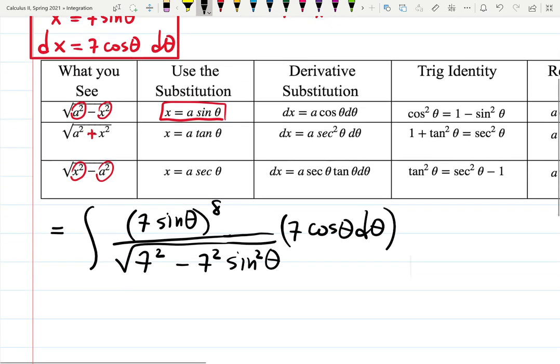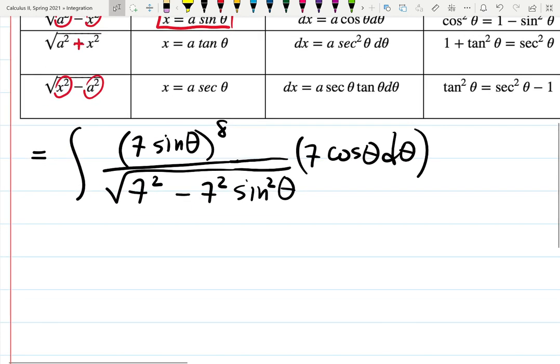Then the new integral becomes x to the 8 is 7 sine theta to the 8, all over a square root 49, let's write it down as 7 squared minus x squared, which is 7 squared sine squared theta. And don't forget dx, which is 7 cosine theta d theta. This is our new integral. So as expected, and I forgot 11, remember it was raised to 11 over here or outside of the square root. You can actually have it outside like so, which maybe is even more convenient.